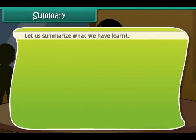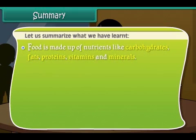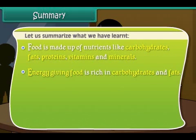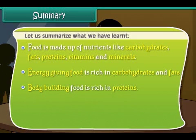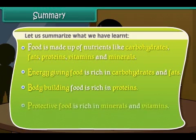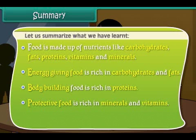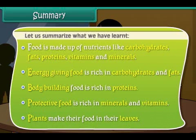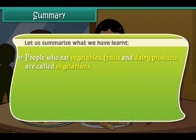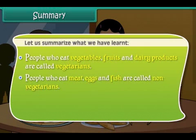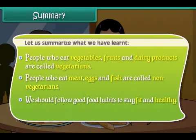Let us summarize what we have learned. Food is made up of nutrients like carbohydrates, fats, proteins, vitamins, and minerals. Energy giving food is rich in carbohydrates and fats. Body building food is rich in proteins. Protective food is rich in minerals and vitamins. Plants make their food in their leaves. People who eat vegetables, fruits, and dairy products are called vegetarians. People who eat meat, eggs, and fish are called non-vegetarians. We should follow good food habits to stay fit and healthy.